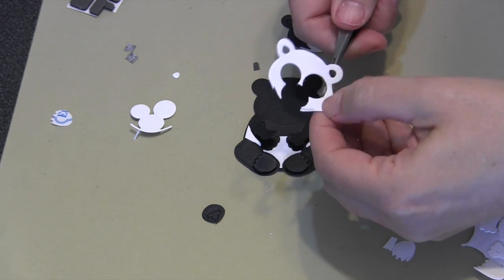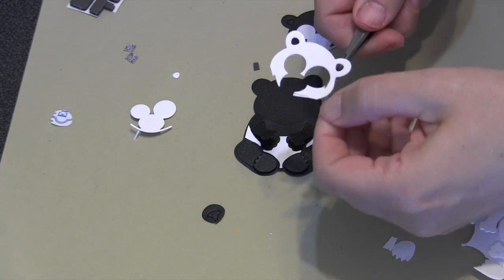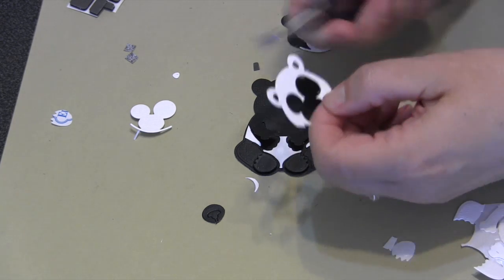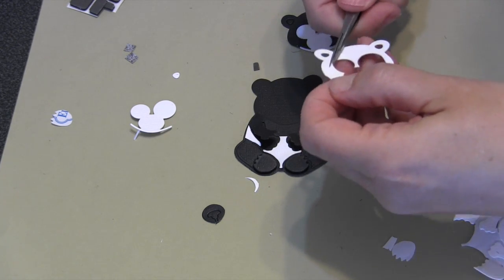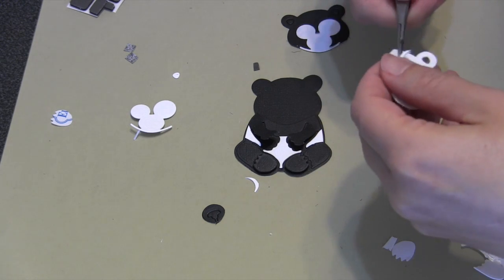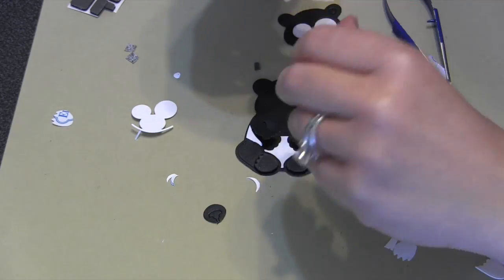Before I'm going to glue his white head on, I want to take the detail scissors and just elongate those little eye sockets on both sides so they look less like round eye sockets and more like the big patches that are so common on pandas.